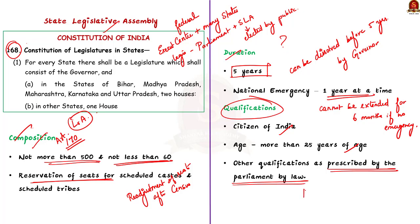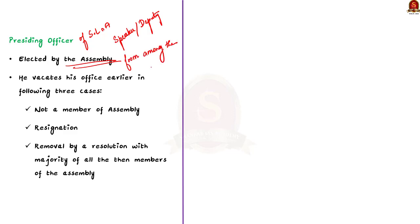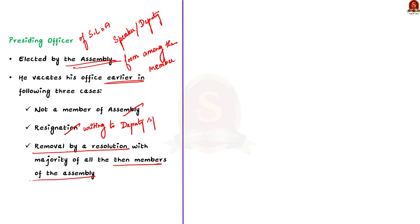There is a Speaker and a Deputy Speaker for the Legislative Assembly. The Speaker is elected by the Assembly itself from amongst its members and usually remains in office during the life of the Assembly. However, he can vacate office earlier if he ceases to be a member, if he resigns by writing to the Deputy Speaker, or if he is removed by a resolution passed by a majority of all then members of the Assembly.